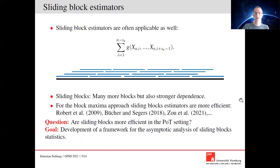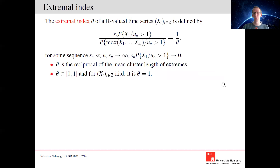Before I introduce the limit theorem, I want to show you some examples — specifically the extremal index. The extremal index is quite popular for describing the heaviness of dependency in extremes of a time series. One over the extremal index is basically the mean cluster length of extremes. Under weak conditions it can be defined by the limit of a fraction where the numerator is the expected number of extreme observations and the denominator is the expected number of blocks which contain extreme observations, so dividing the number of extremes by the number of blocks gives the mean cluster length. This is the interpretation of the extremal index.